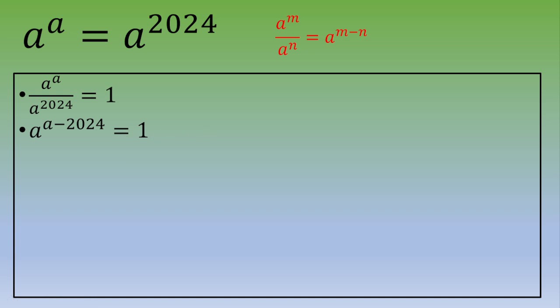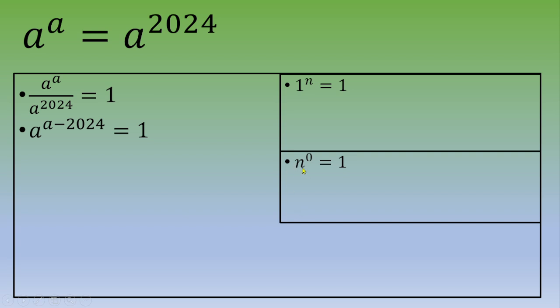And then we've got three cases. First, 1^n = 1 whatever the value of n. Second case, if we've got a number different from zero, that number^0 = 1. And third case, if we've got -1 and the power is an even number, this is 1.